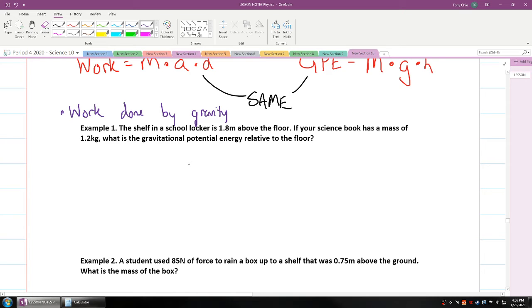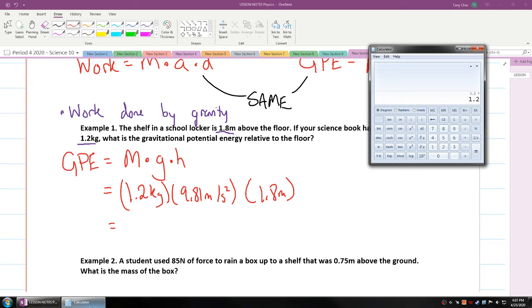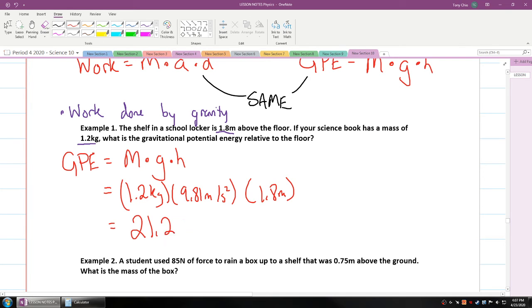So look at example number one. The shelf in a school locker is about 1.8 meters above the floor. If your science book has a mass of about 1.2 kilograms, what is the gravitational potential energy relative to the floor? Well, we know GPE is equal to mass times gravity times height. Well, in this case, the mass is 1.2 kilograms, gravity is 9.81 meters per second squared, and the height is 1.8 meters. If I plug this all into my calculator, I'm going to get 21.2 joules. So that means this book will have 21.2 joules of gravitational potential energy.